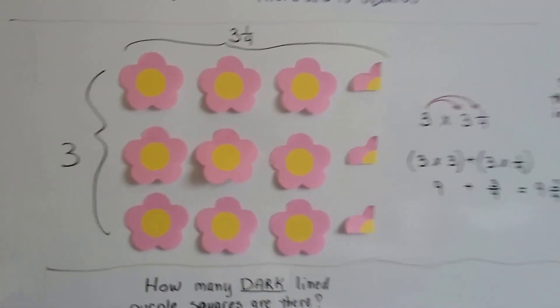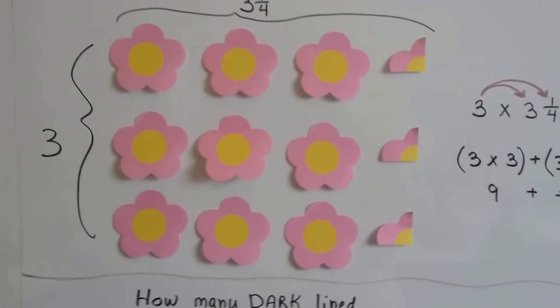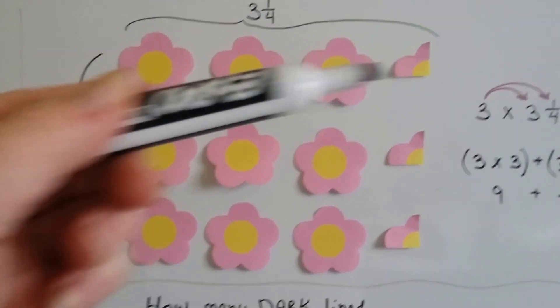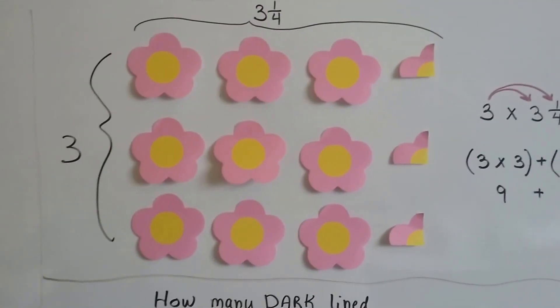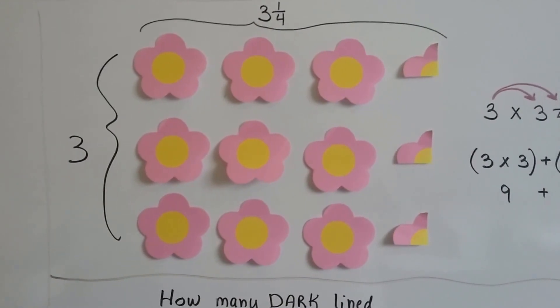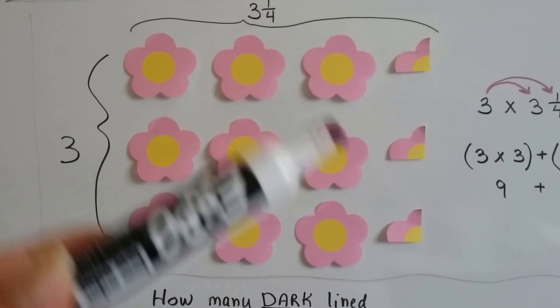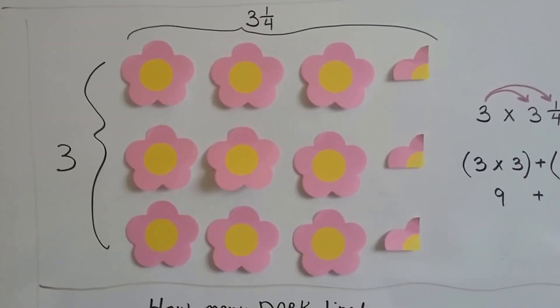Look at these flowers. So how many flowers are there? There's 3 coming down this way, but there's 3 and 1 fourth going that way. So we can multiply 3 times 3 and 1 fourth. 3 times 3 is 9. We can see the 9 right here. And then we have 3 fourths, don't we?